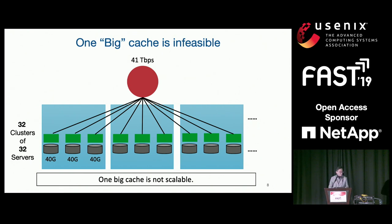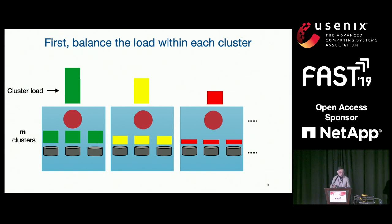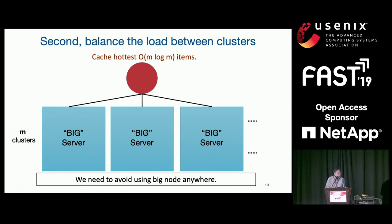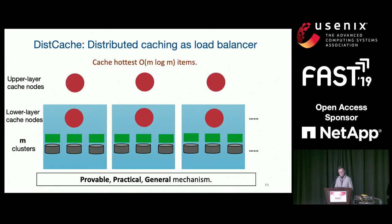Let's solve the problem step by step. We can deploy a single node in each cluster to balance the servers inside one cluster. However, the load between clusters is still not balanced. By putting these small nodes, each cluster has now become a big server. You then need one big node that caches the hottest M log M items to balance the load between the M clusters. However, we need to avoid using this big node. Instead, we introduce our work — disk cache — a distributed caching mechanism to provide load balancing across clusters.